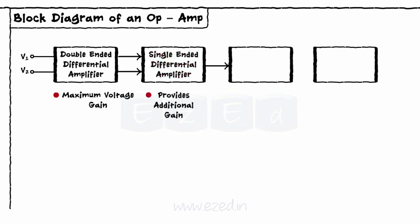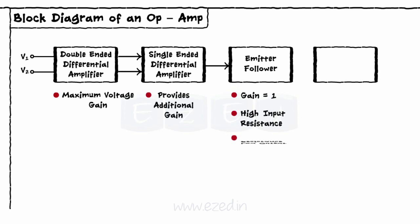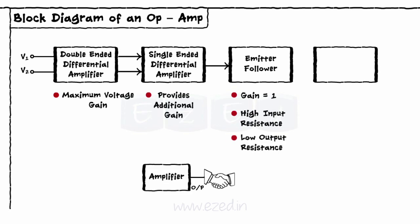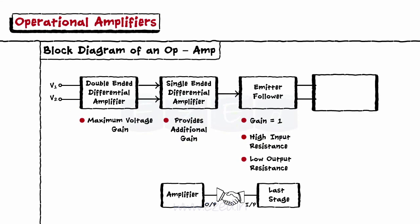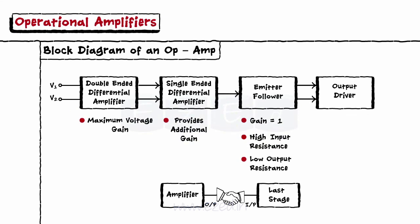The third block is an emitter follower. It has unity gain, high input resistance, and low output resistance. It matches the output of the amplifier stage with the input of the last stage. The last stage is an output driver, which supplies a large output voltage or current.